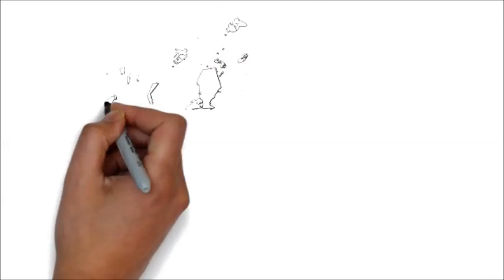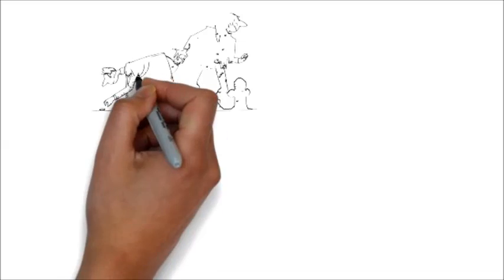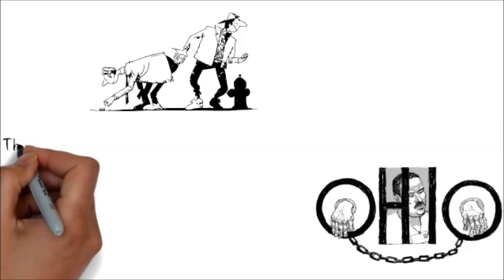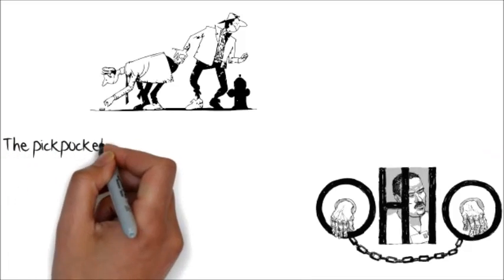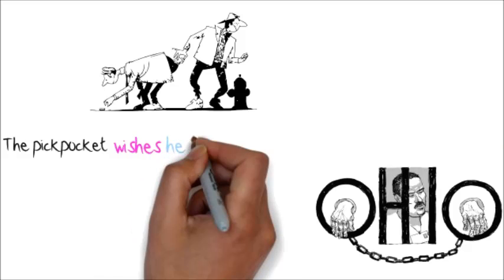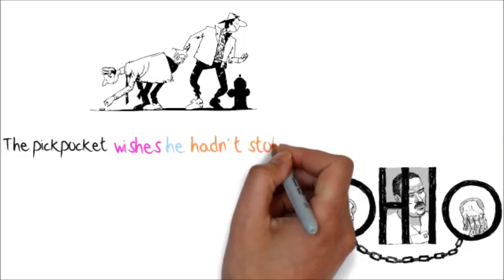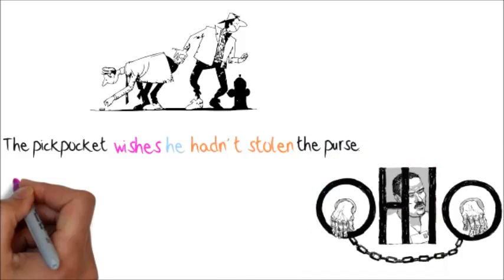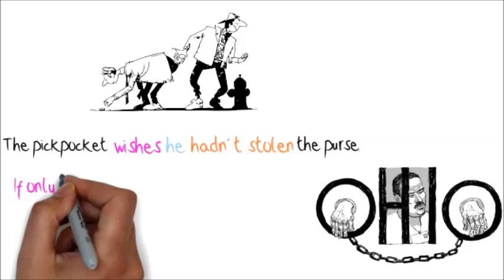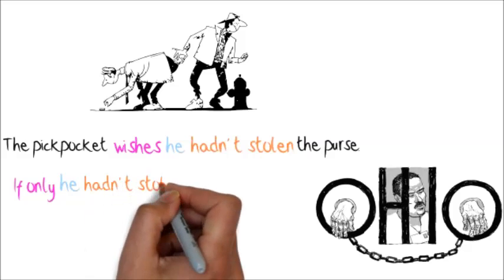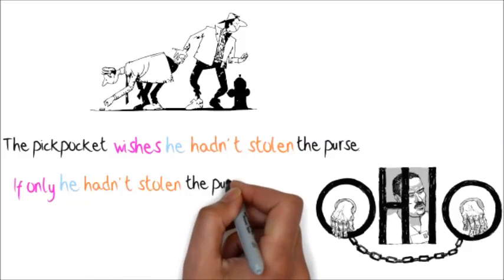Let's move to the next example. Here, as you can see, we have a pickpocket who stole another man's purse. As a result he got arrested and was sent to jail. Now he regrets it. The pickpocket wishes he hadn't stolen the purse. The same way we can say: if only he hadn't stolen the purse.